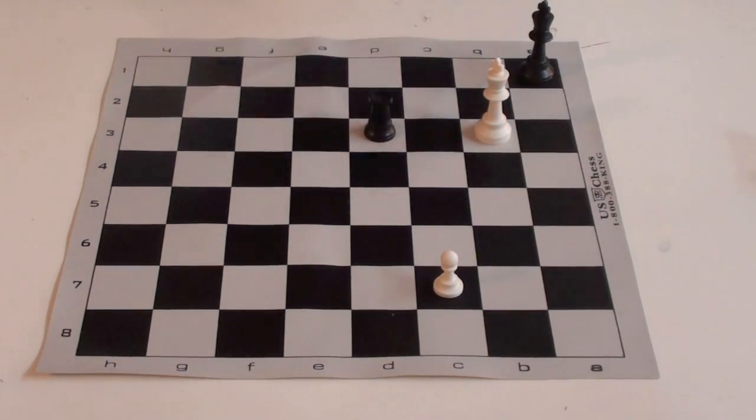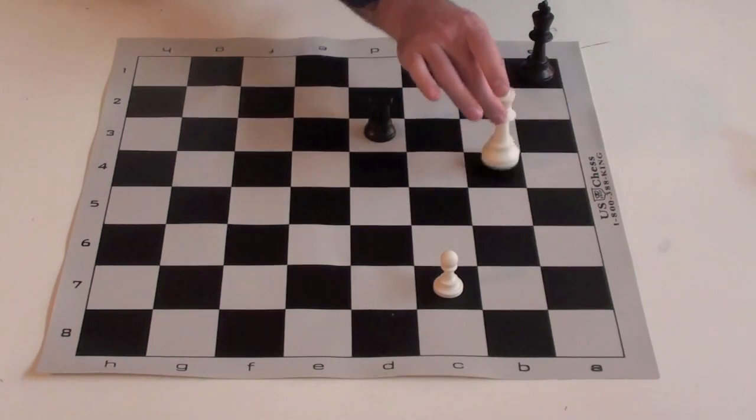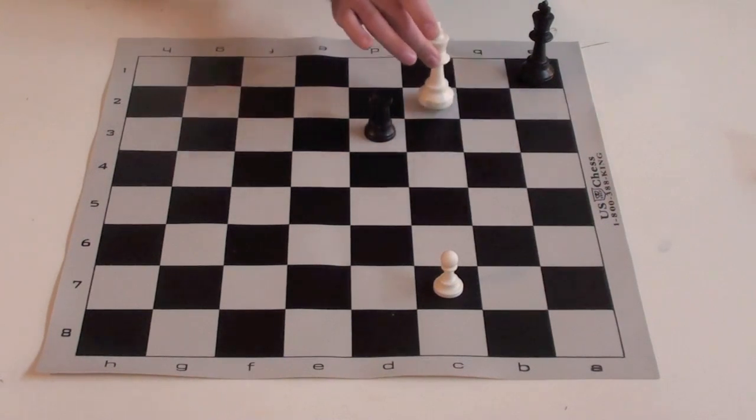The rook will follow. Now, we know that the king can't go to here and he can't step away. And this is a repetitive move. So the best move for the king is here.